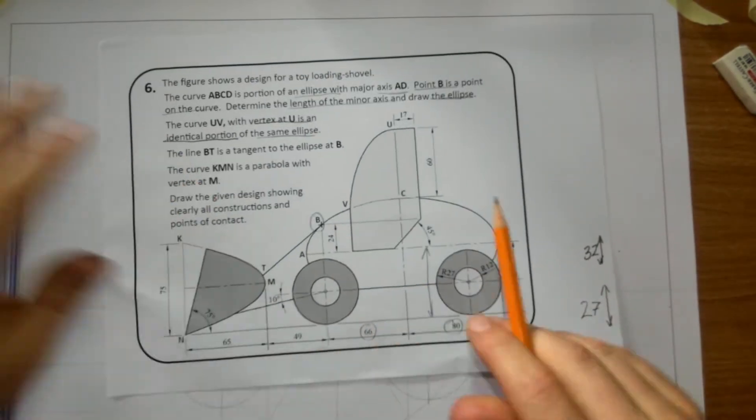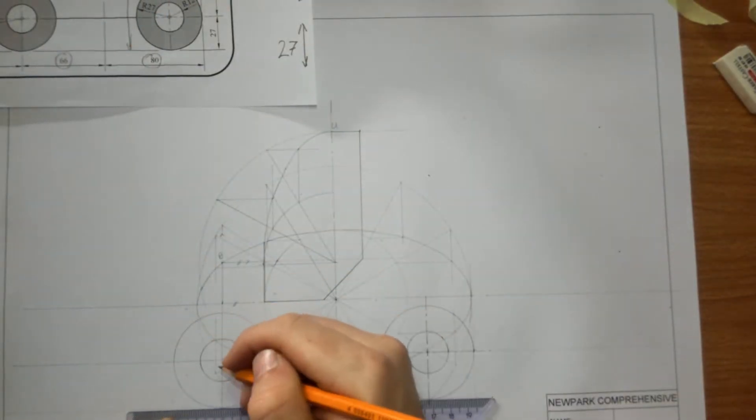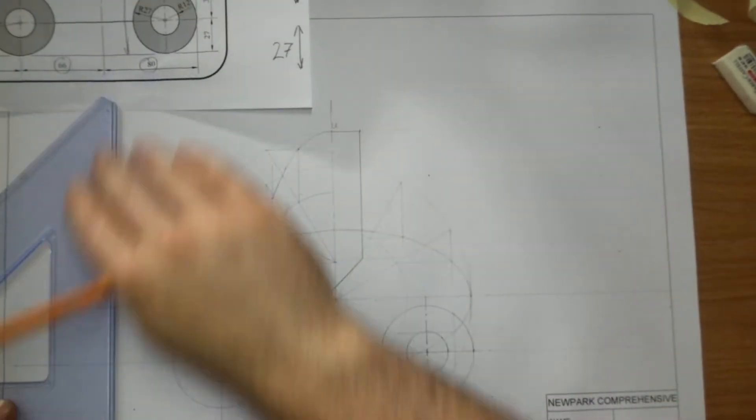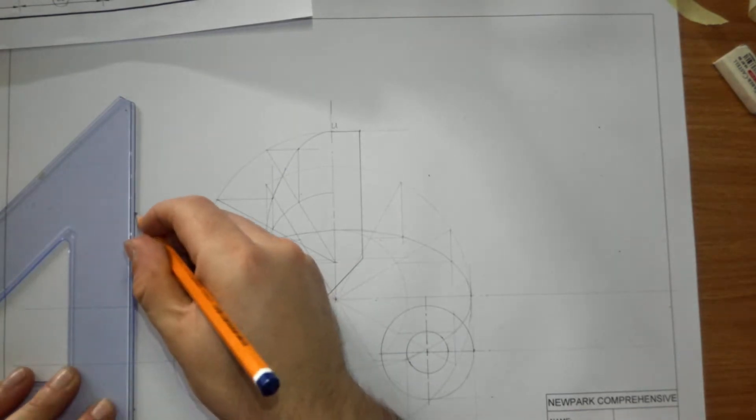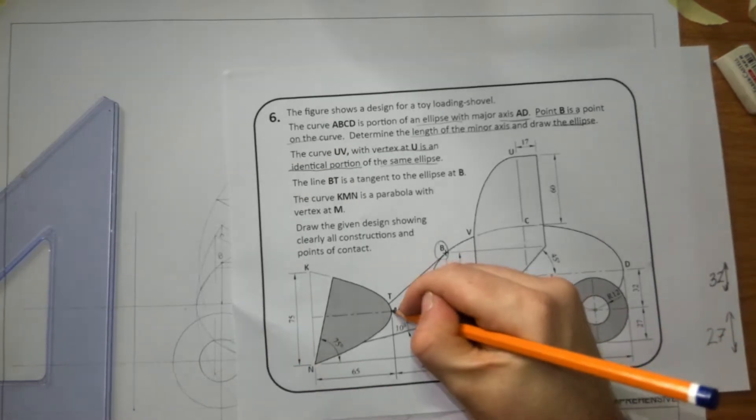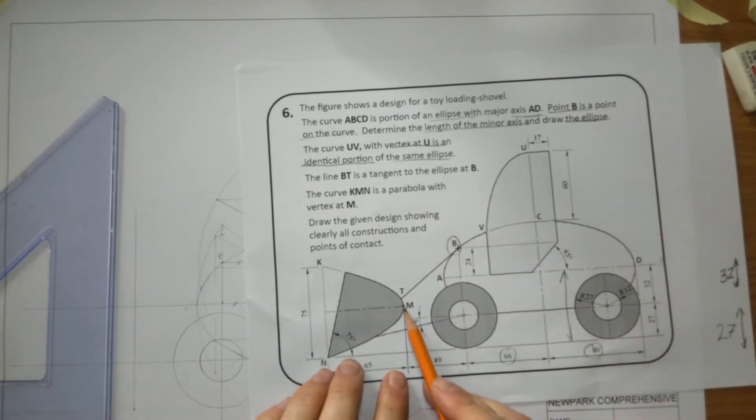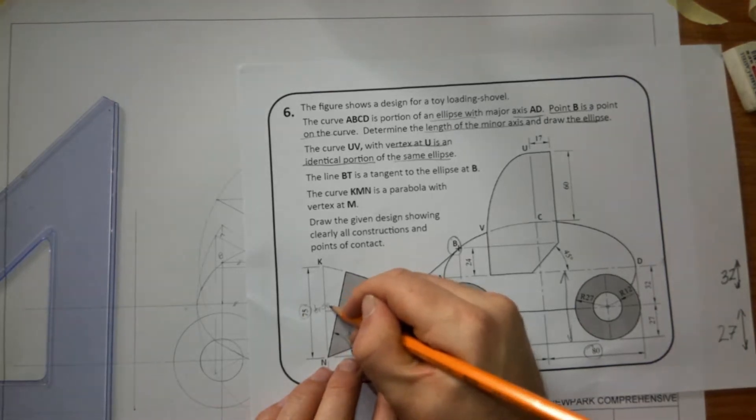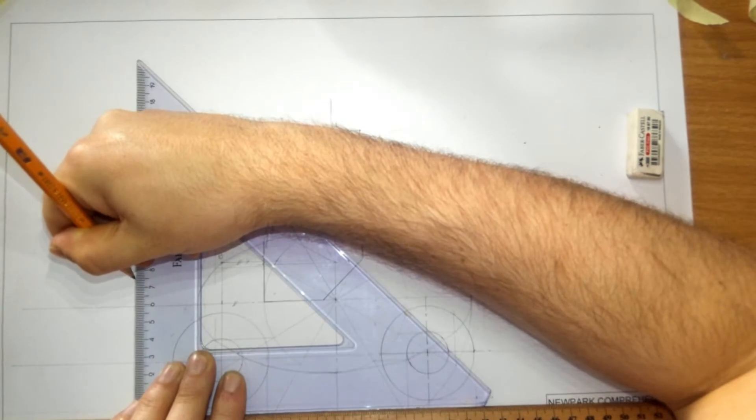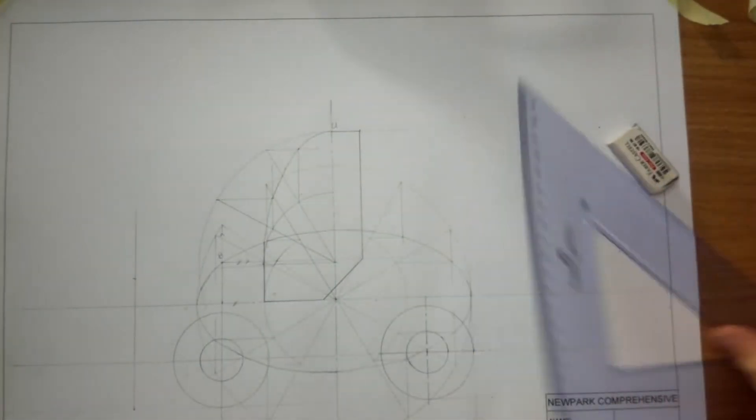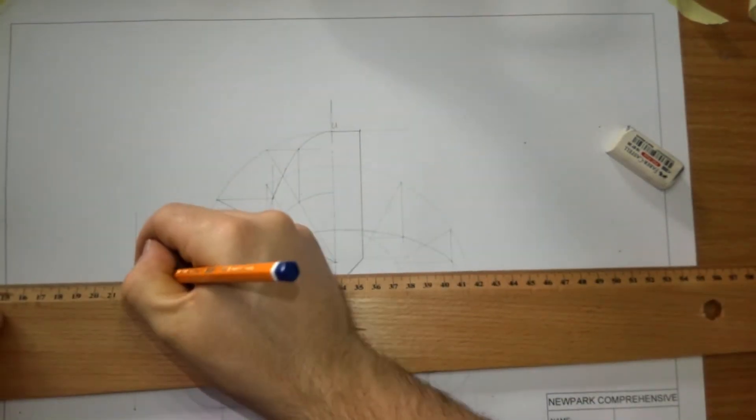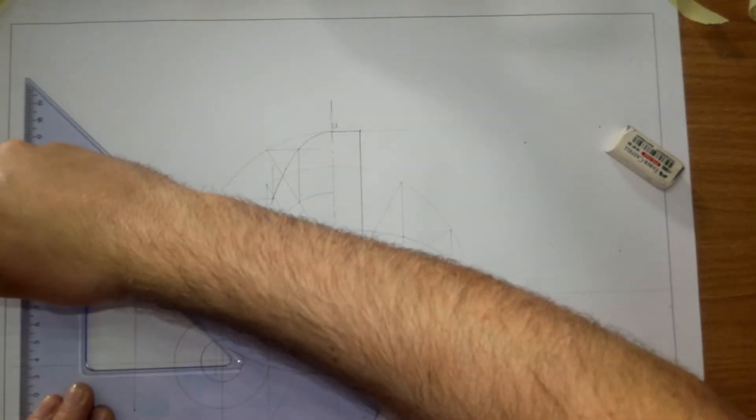Now we'll set out the parabola. We'll go 49 over to the left from the center of the circle. The height of it is 75. We'll draw a light line up and mark up 75 in it. To get point M we'll have to bisect it and then the width of it will be 65.